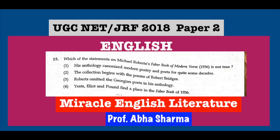Question number 15: Which statement on Michael Roberts's Faber Book of Modern Verse is not true? This is a poetry anthology whose first edition was made by Michael Roberts in 1936, published by Faber and Faber. There was a second edition by Anne Ridler in 1951, and a third in 1965 by Donald Hall. Poems published after 1910 were taken into consideration, so Hopkins was included. The incorrect statement is that the collection begins with poems of Robert Bridges — that is the statement which is not true.